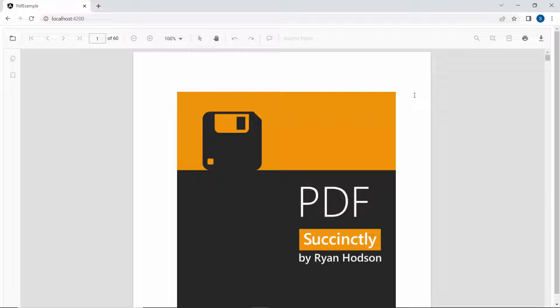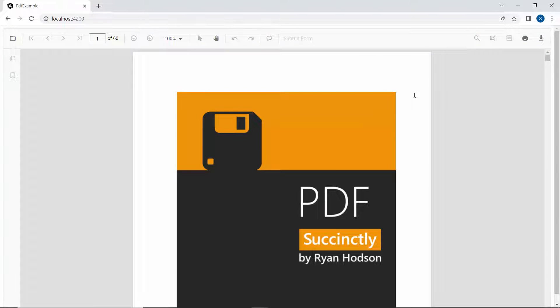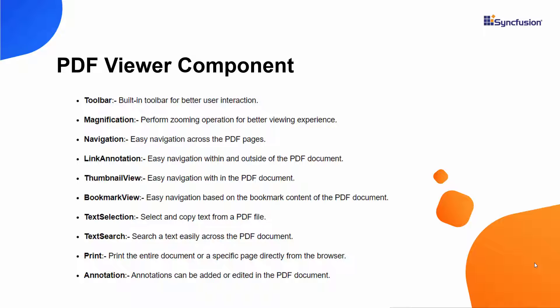Suppose I want to load the PDF file programmatically, then I open the app component file and define a string variable, pdfPath, and set an appropriate PDF file name to it. This PDF file is available in the server-side hosted project. I then assign this variable to the documentPath property, so the PDF Viewer initially loads the provided PDF document. The Angular PDF Viewer toolbar options are displayed but in a disabled state. To enable the options in the toolbar, I need to inject the required services.